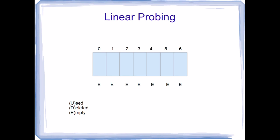Let us assume that we are going to add a value 10 — this is the key. The hash function would return a hash index of 1, so 10 would be assigned to the second element within the array. Once that's been done, we change the mark on that element from empty to used.